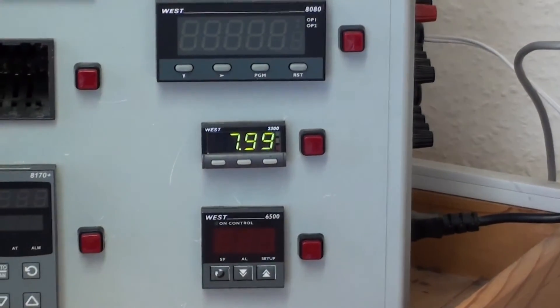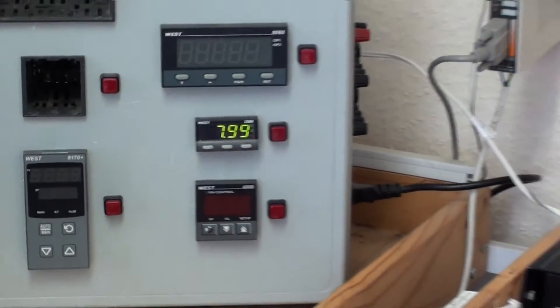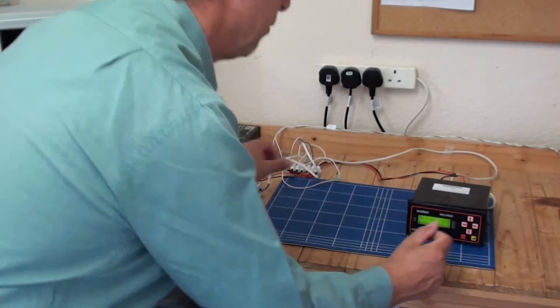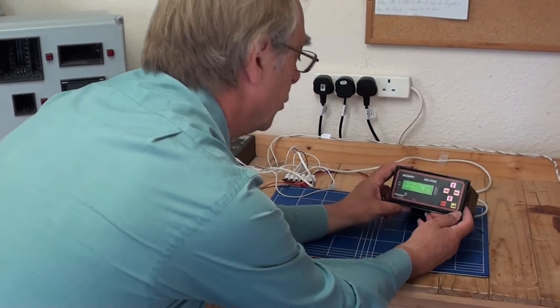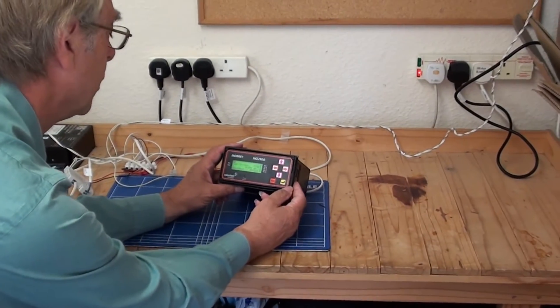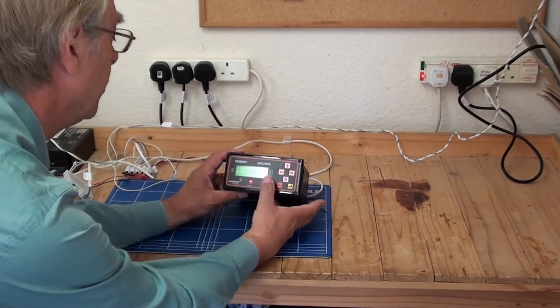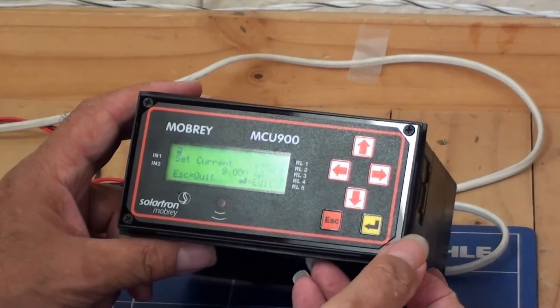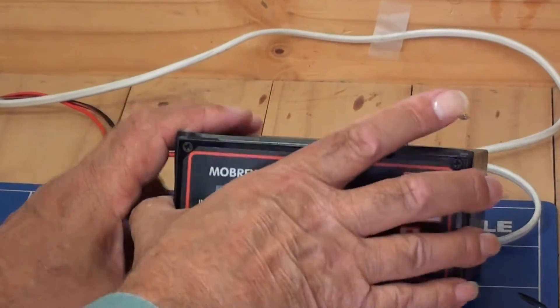With the control unit giving the 4-20mA signal to the SEM1200, there is a commissioning tool where I can set the current. If I go into that and set, say, 12mA, we should see the same on the two indicators.